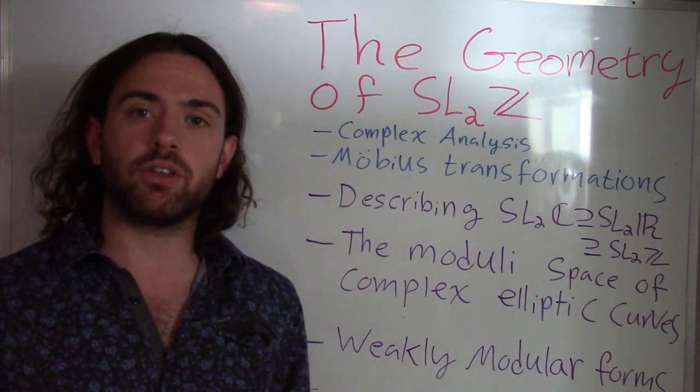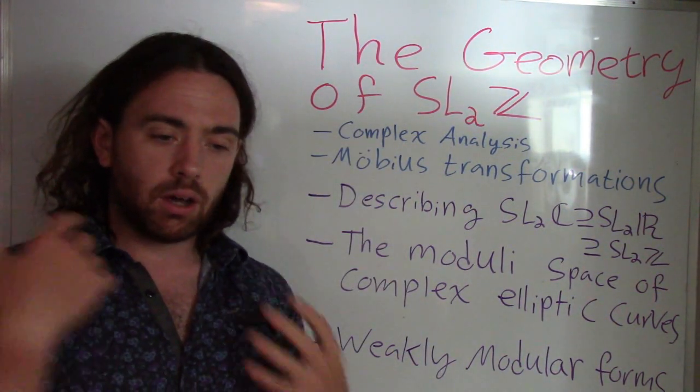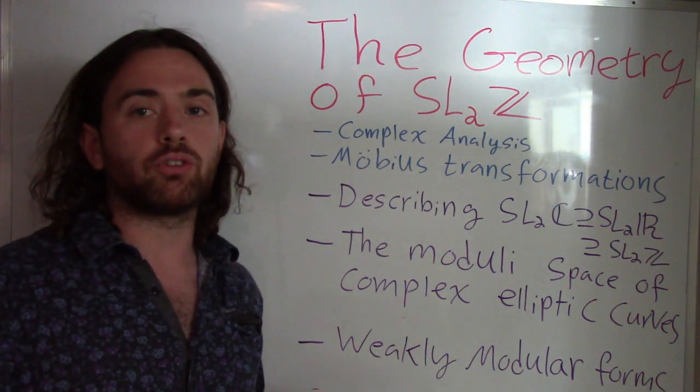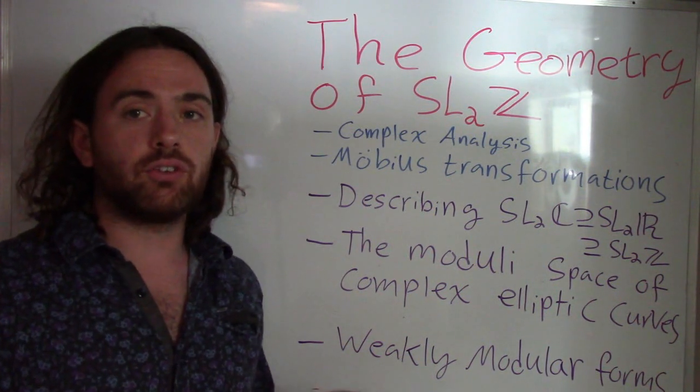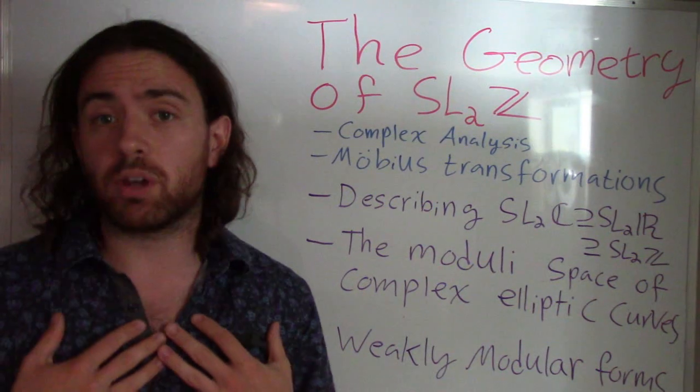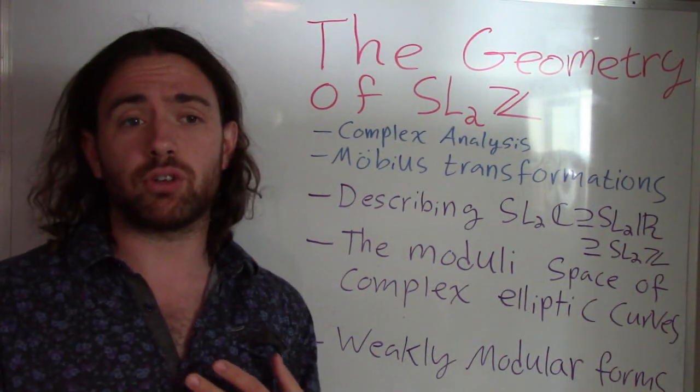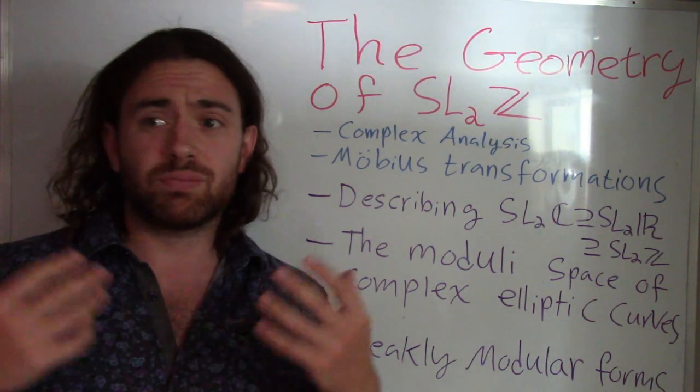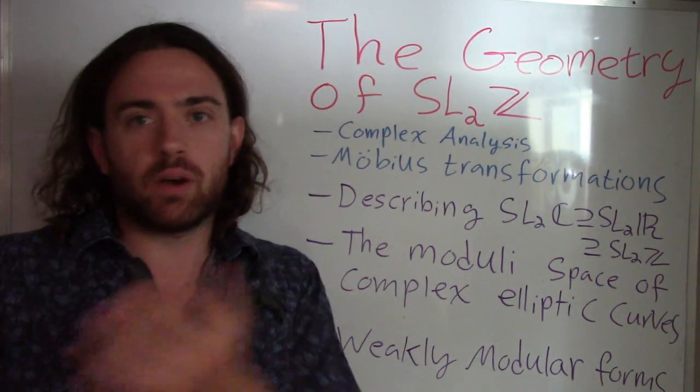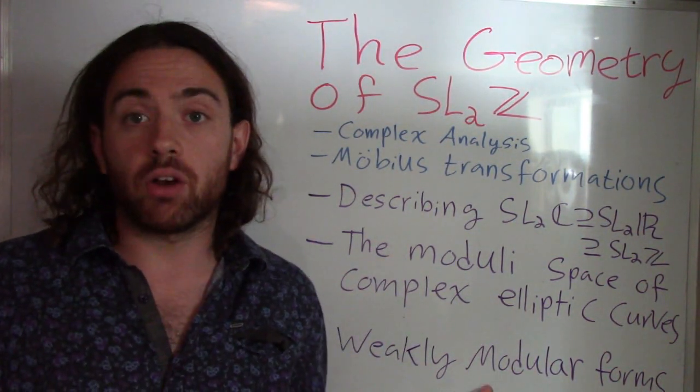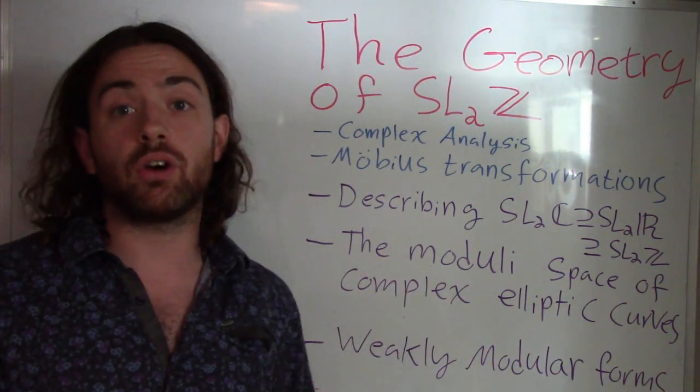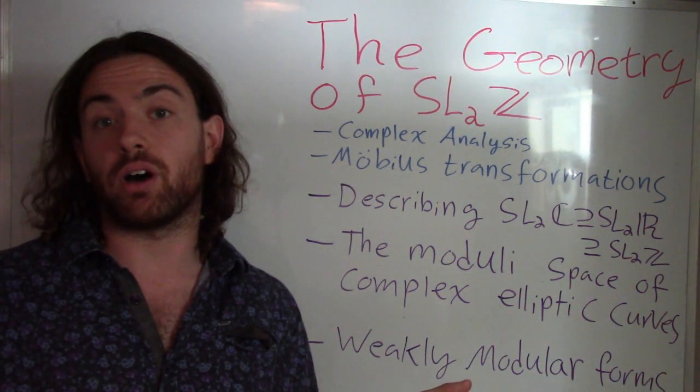And to cap everything off, I think that understanding this will help lead to a definition of weakly modular forms that is maybe more acceptable than a lot of textbooks. I've noticed myself, when you first come across the definition of a modular form, it's like, well, why is that the transformation property that we're going to use and not something else? So I think there's a somewhat natural road to that through understanding these videos, and that's what we're going to cap this series off with.